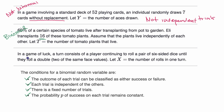The third scenario: in a game of luck, a turn consists of a player continuing to roll a pair of six-sided dice until they roll a double — two of the same face values. Let X equal the number of rolls in one turn. The thing that jumps out is that you don't have a fixed number of trials. You could say each roll is a trial, success is getting a double which has a fixed probability, and whether you get a double on each trial is independent of the previous roll. But there is no fixed number of trials — there's some chance you might have to roll 20, 200, or however many times until they roll a double. So since there is not a fixed number of trials, X is not binomial.